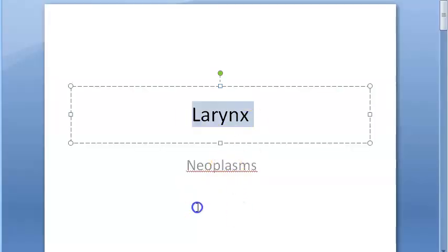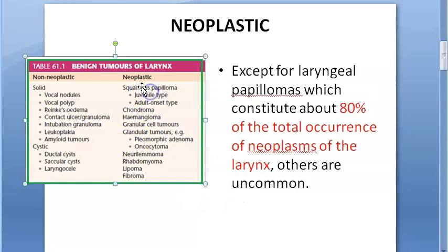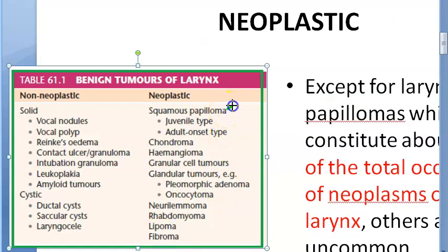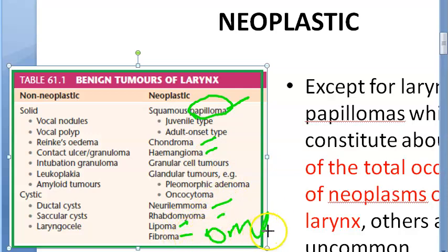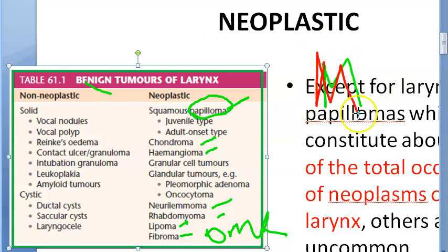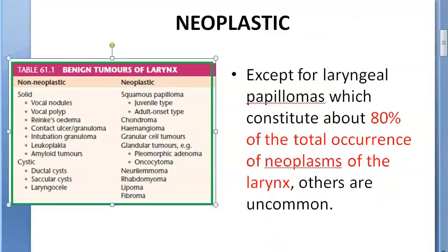In this video, let us look at neoplasms of the larynx — specifically the benign ones, not the malignant ones. These include squamous papilloma, chondroma, hemangioma, neurilemoma, rhabdomyoma, lipoma, and fibroma — all ending in '-oma,' indicating they are benign. If they were malignant, they would be called carcinoma or sarcoma.